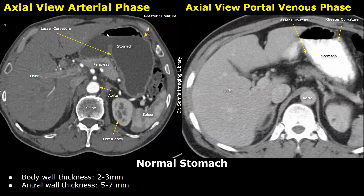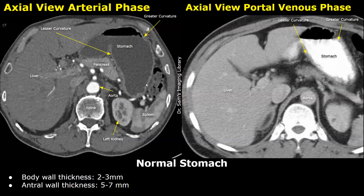Water is used as a neutral oral contrast agent. The stomach lumen appears darker or hypodense. It helps to distend the stomach without introducing artificial density, making it easier to visualize the stomach's inner lining and differentiate it from the surrounding tissues. The gastric folds or rugae may be visible, particularly in the body and antrum of the stomach.